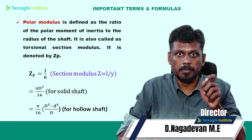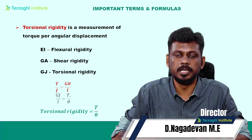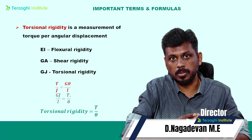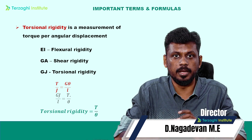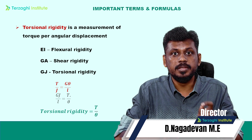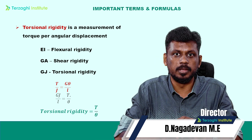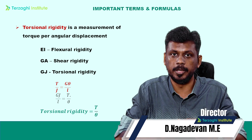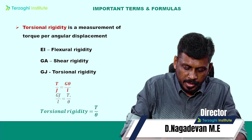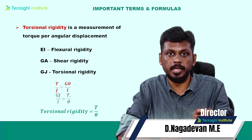Next important definition is torsional rigidity. EI means flexural rigidity, GA means shear rigidity, and GJ means torsional rigidity. From T/J = Gθ/L, torsional rigidity is GJ. Torsional stiffness is GJ/L, so T/θ = GJ/L.